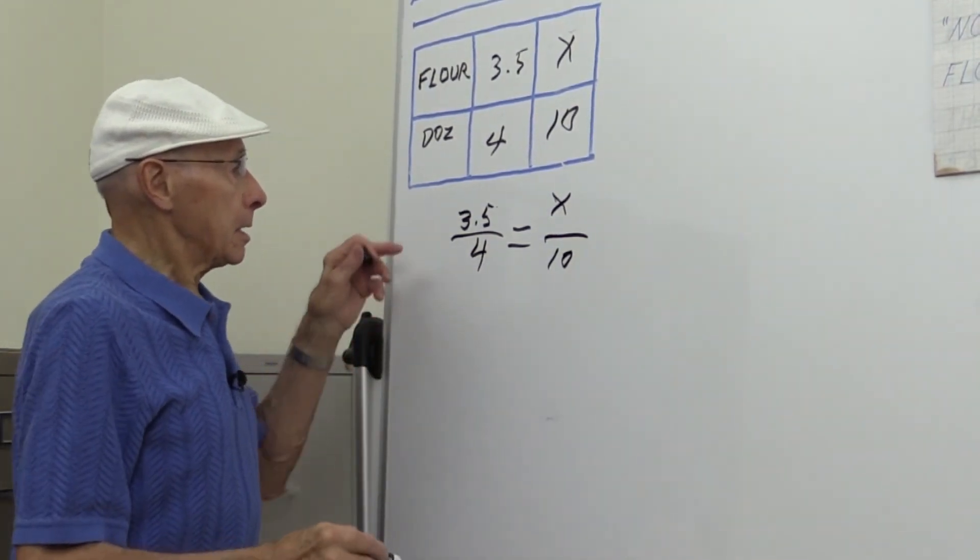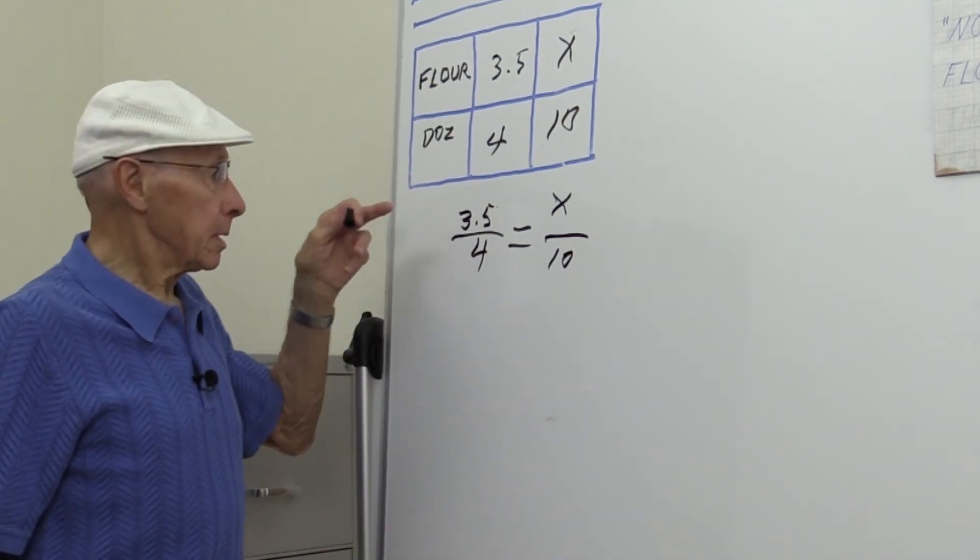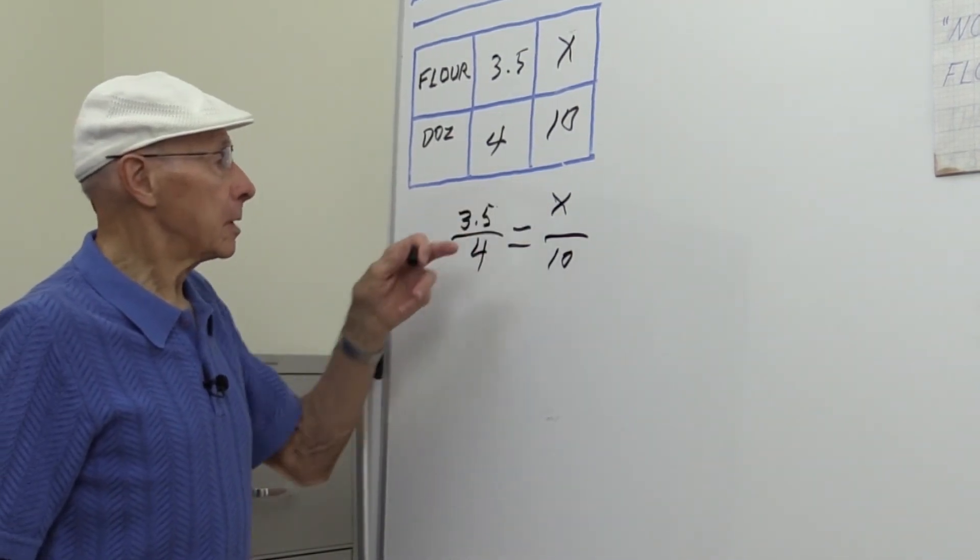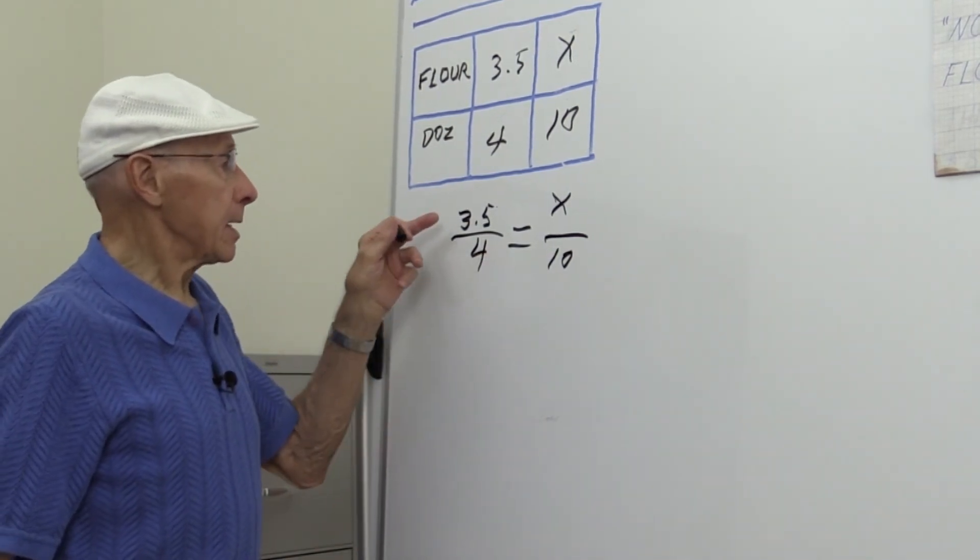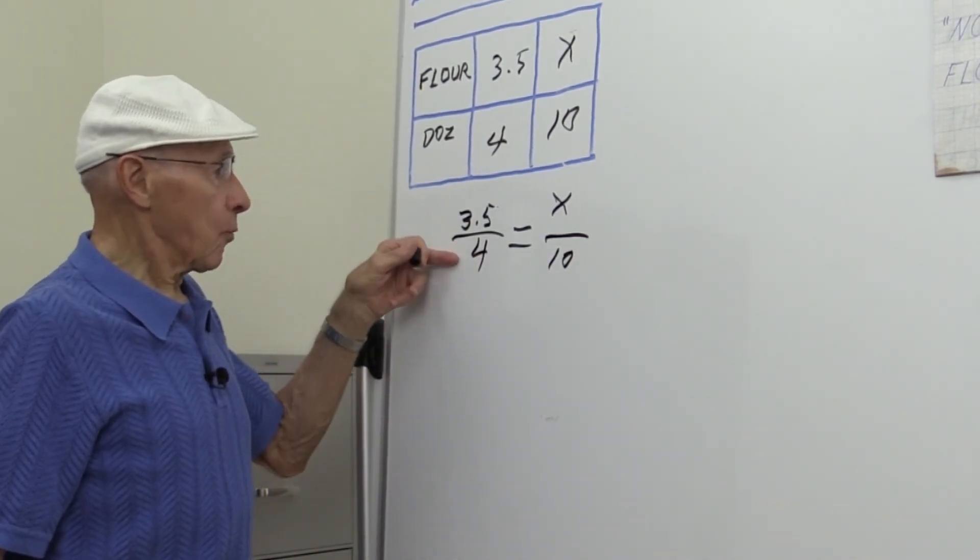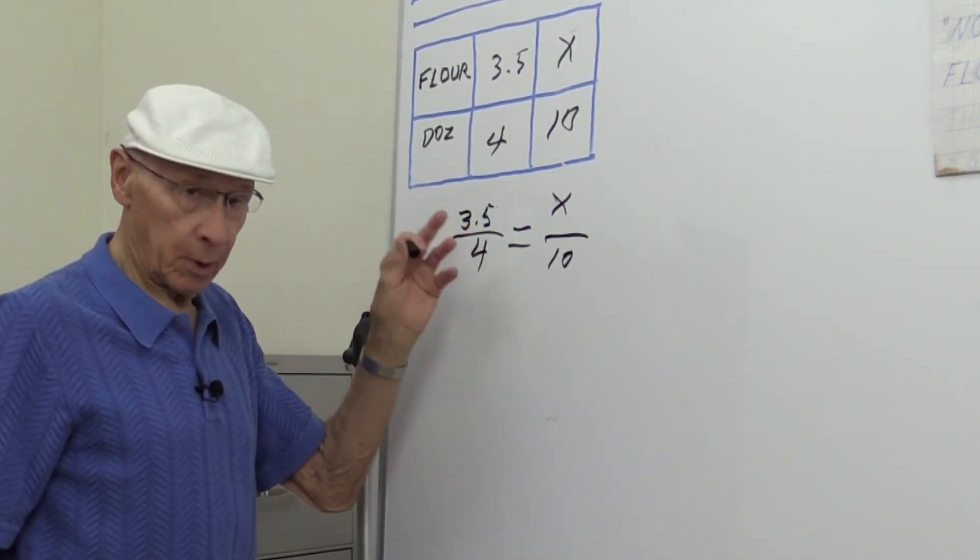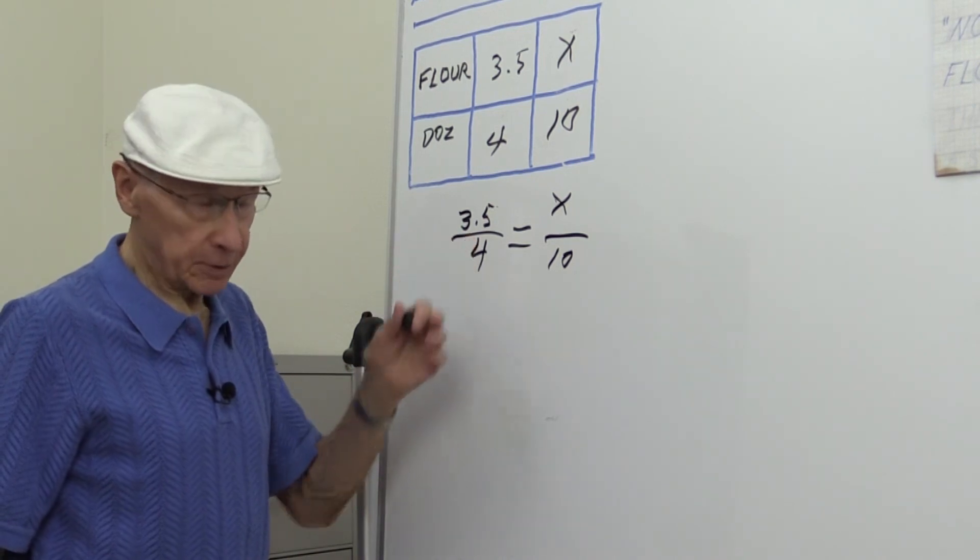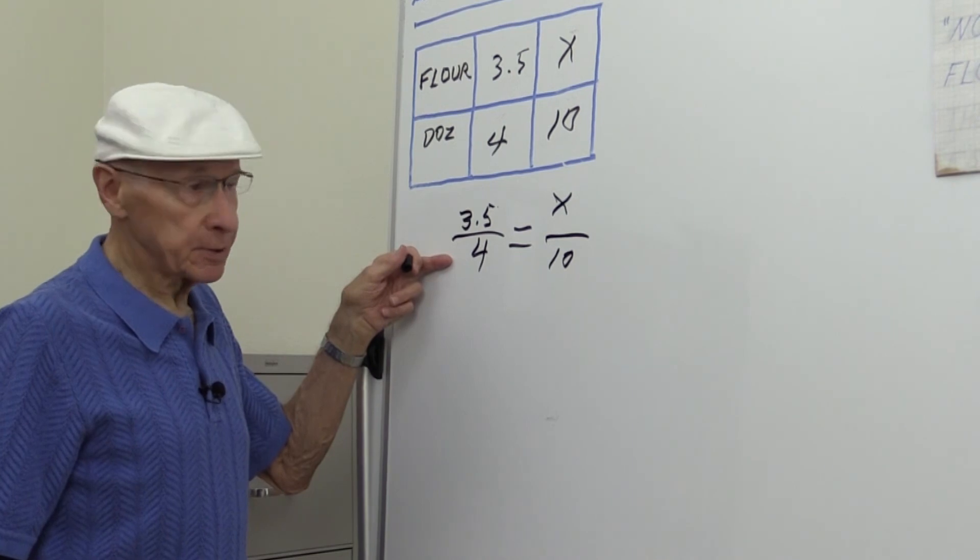So in the numerator, the numerators have to be consistent: flour to flour, dozens to dozens. You can't say 3.5 to 4 is 10 to x—then this whole mathematical equation fails. So numerators have to be consistent, denominators have to be consistent.